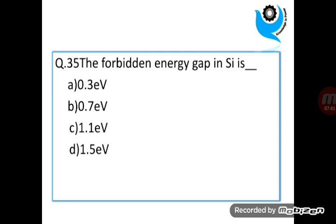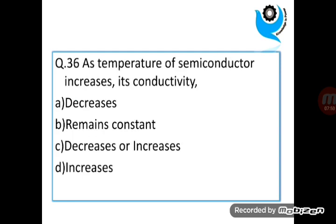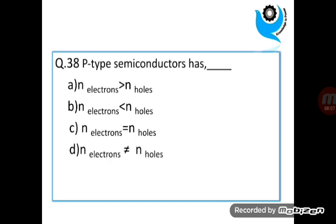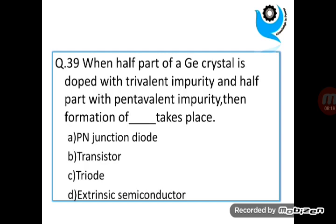Question 36. As temperature of semiconductor increases its conductivity Increases. Question 37. Process of adding impurity to a semiconductor is known as Doping. Question 38. P-type semiconductors has Number of electrons less than number of holes. Question 39. When half part of a germanium crystal is doped with trivalent impurity and half part with pentavalent impurity then formation of PN junction diode takes place.